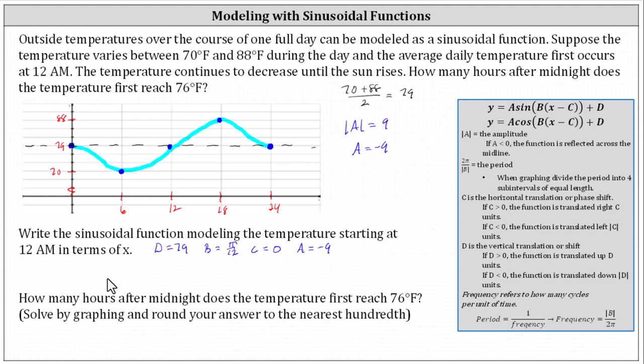Now we have all the information we need to write our sinusoidal function. We have y equals a which is negative 9 times sine of b times the quantity x minus c but c is 0. And therefore we just have π divided by 12x and then plus d where d is 79.